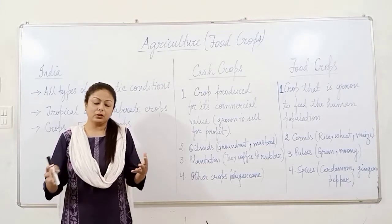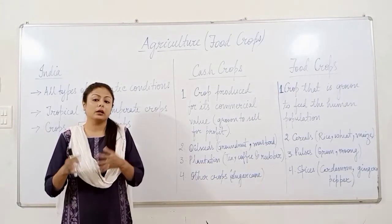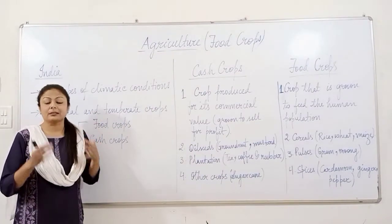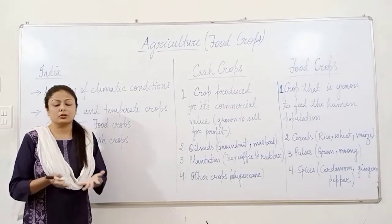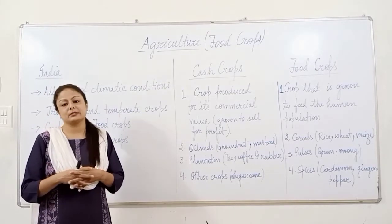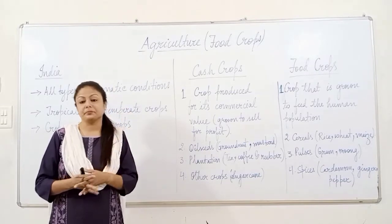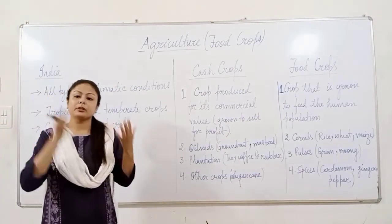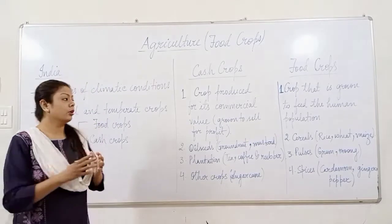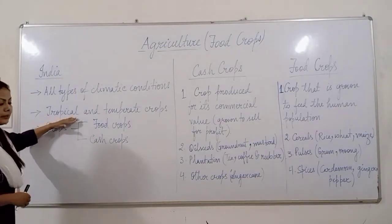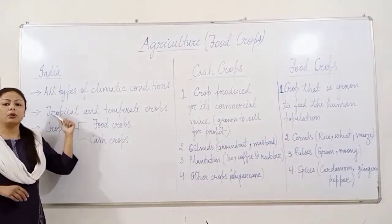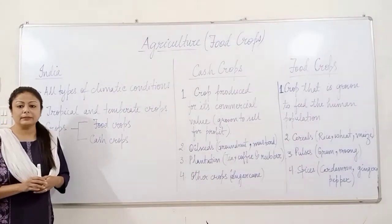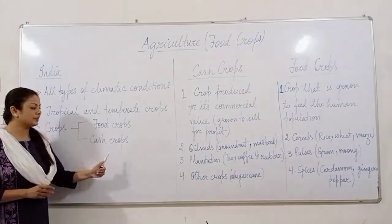As a result of those agricultural practices we can grow a large variety of crops in India. The credit goes to the geographical location — India is situated such that a variety of climatic conditions are experienced in the country. Because all types of climatic conditions ranging from tropical to temperate are experienced in India, a variety of crops grow. Both tropical and temperate crops grow in India, and if we categorize them into two types, the crops are food crops and cash crops.